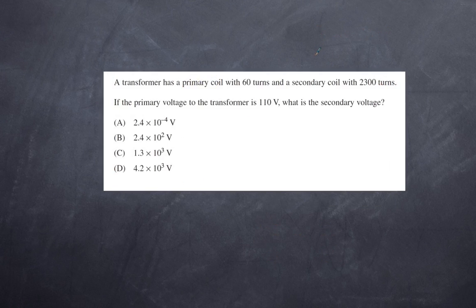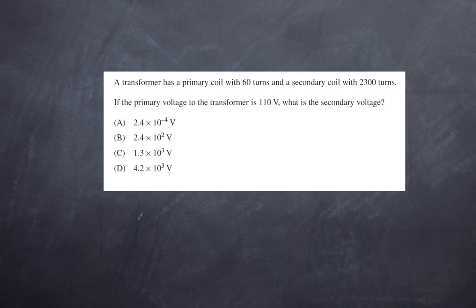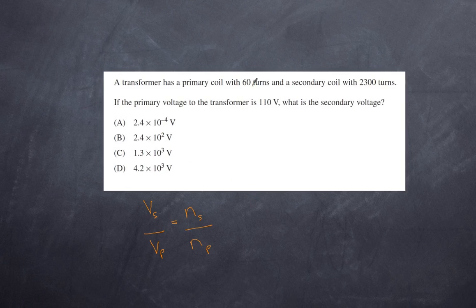Second question: a transformer has a primary coil with 60 turns and a secondary coil with 2300 turns. If the primary voltage is 110 volts, what is the secondary voltage? The ratio of turns from primary to secondary is the same as the voltage ratio, so: secondary voltage divided by primary voltage equals secondary turns divided by primary turns.